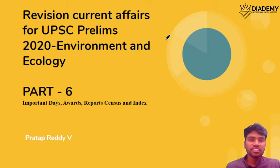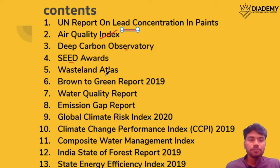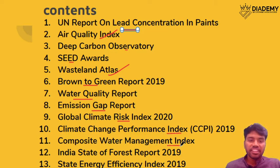Welcome back, friends. Let us continue with Part 6 of our revision series. Today we will cover important awards, reports, and indices including: the UN report on lead concentration, air quality index, deep carbon observatory, SEED award by UNEP, wasteland atlas, brown to green report, water quality report, emission gap report, global climate risk index, climate change performance index, composite water management index, state energy efficiency index, and the India State of Forest Report 2019.